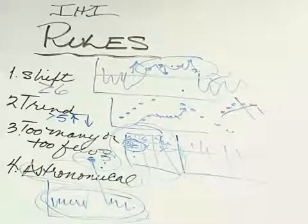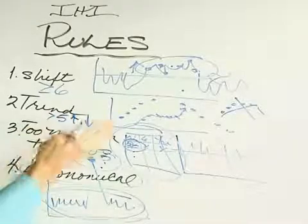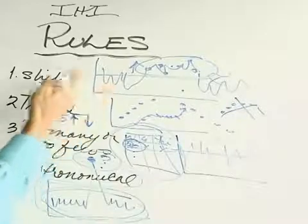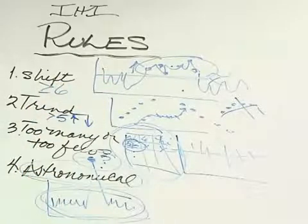So there you have it, the run chart in a nutshell. You've got the elements, x and y axis, the median, plot the data over time, figure the number of runs, and then apply the four simple run chart rules.